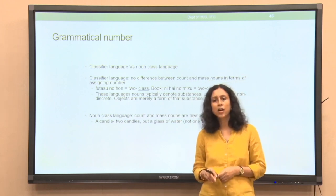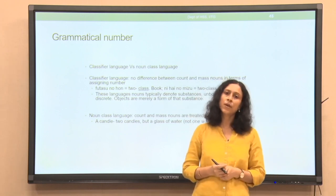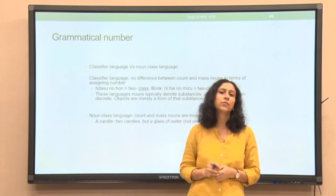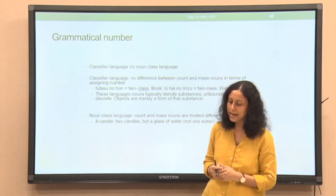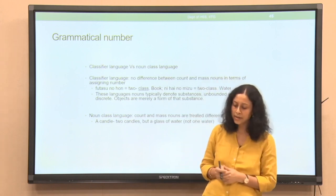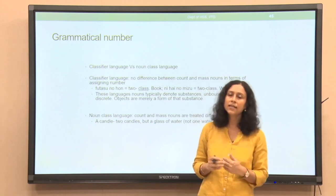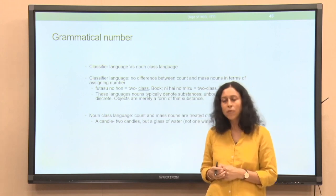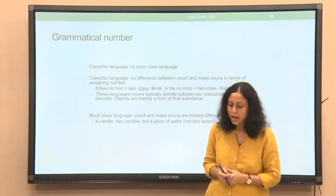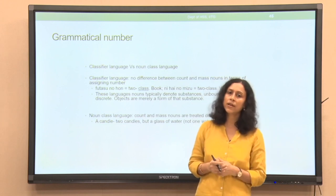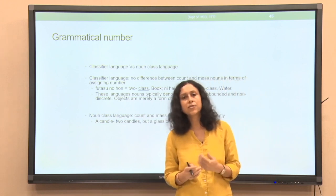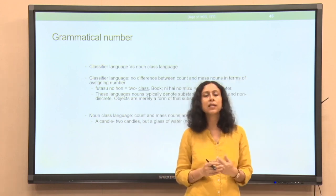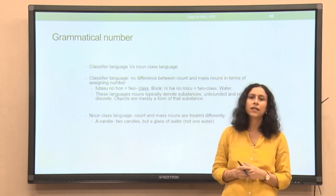Moving to the category of number — this also seems to have some impact on the way we conceptualize. One interesting aspect in grammatical number is the differentiation between classifier languages and noun class languages. Classifier languages have a particular grammatical entity called a classifier that is prefixed or suffixed to nouns. Numeral classifiers are those affixed to numbers in a particular language. In classifier languages, the distinction between count nouns and mass nouns is often blurred, as opposed to noun class languages.